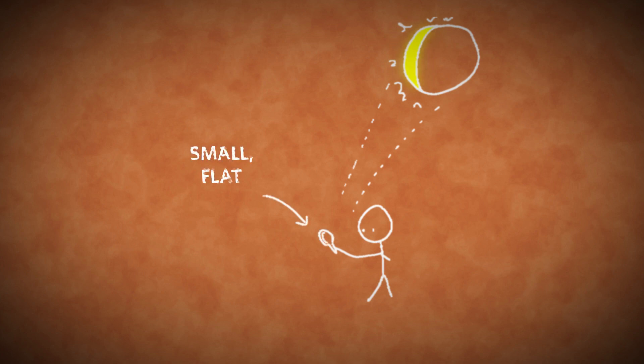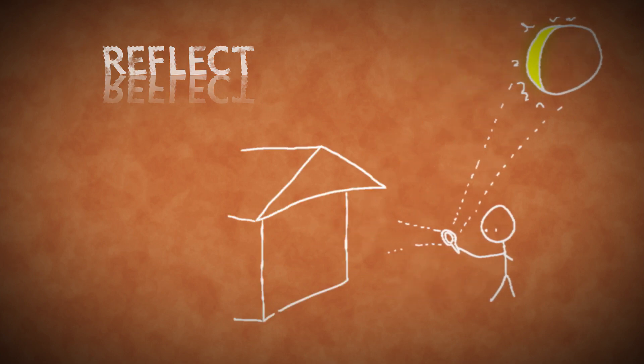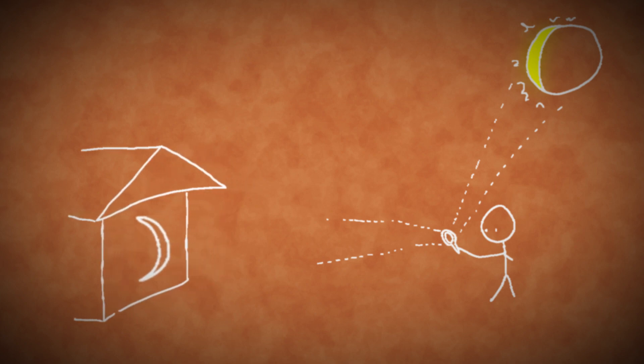You can also use a small, flat mirror to reflect a low-resolution image of the sun onto a shaded surface, such as the side of a building. The farther away the building is, the larger the sun's image will be.